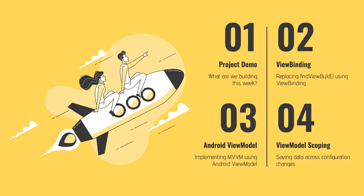We'll go over a quick project overview of what we're building this week. Then we'll talk about view binding and how we can use it to replace calls to findViewByID. We'll then introduce the Android architecture component ViewModel and talk about MVVM and how we can use the ViewModel in that architecture. Finally, we'll wrap up with a brief overview of ViewModel scoping and how we can use it to save data across configuration changes.